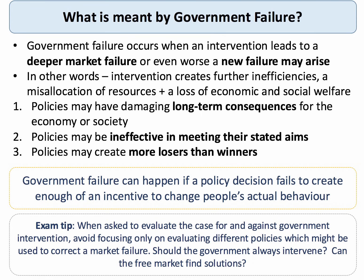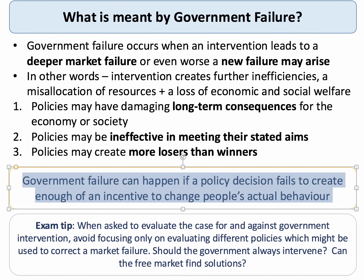A few words on government failure — there's a separate topic video on this in the playlist. Government failure occurs when an intervention in the market, like a tax or subsidy, done with the best of intentions actually makes the market failure worse, or creates a new failure in its wake. In other words, interventions are either inefficient or make things worse. Some policies have long-term damaging effects; some aren't very effective; some create more losers than winners. Crucially, government failure can happen if a policy fails to create enough of an incentive to actually change people's behaviour.